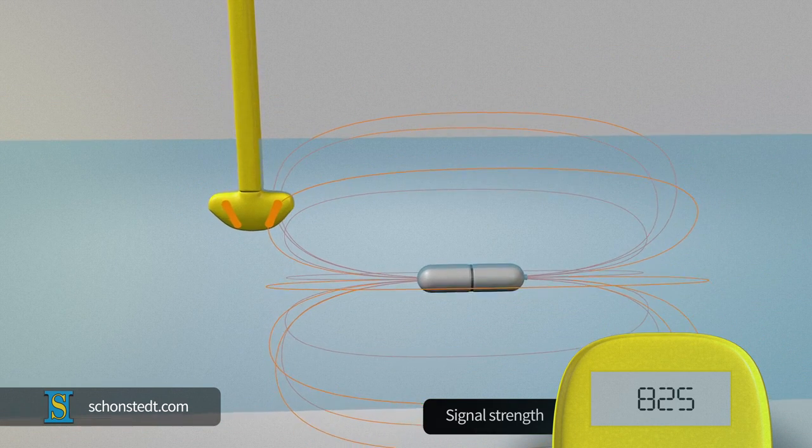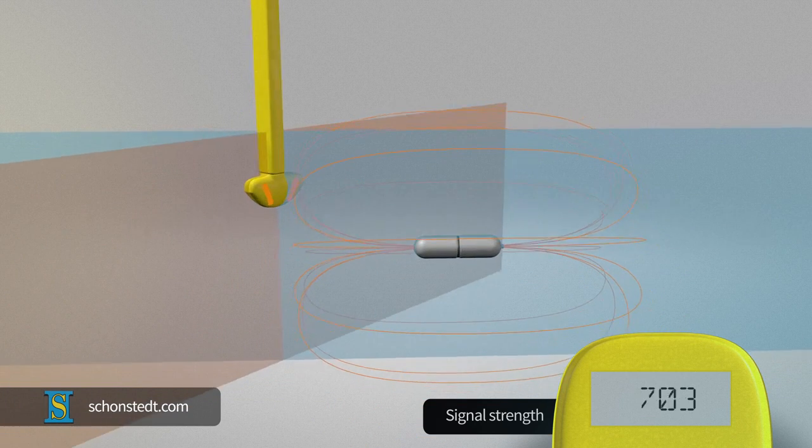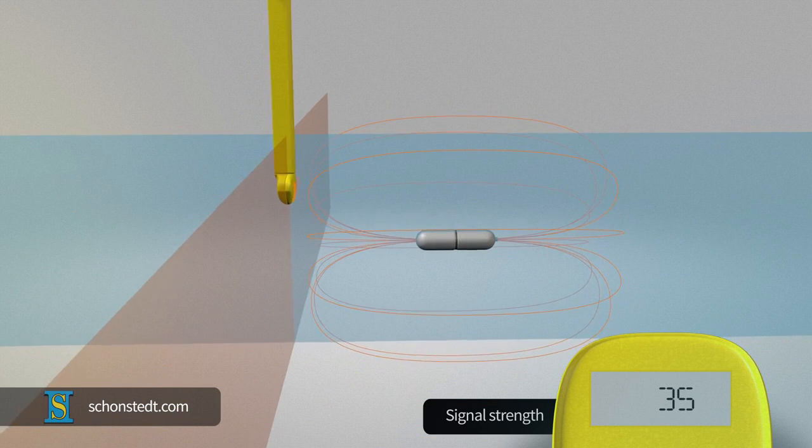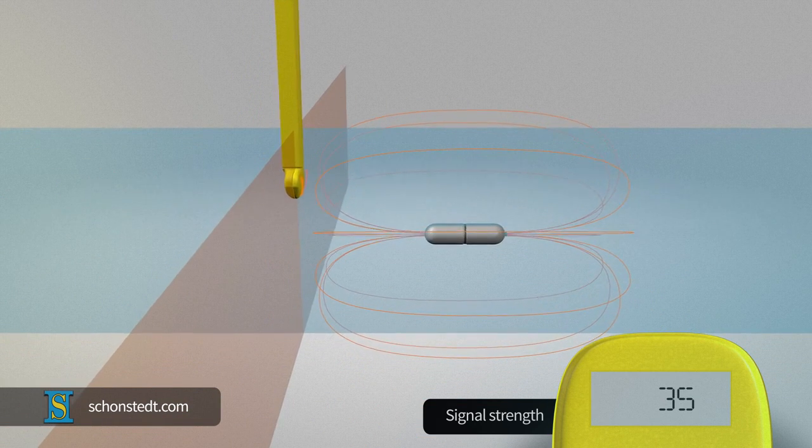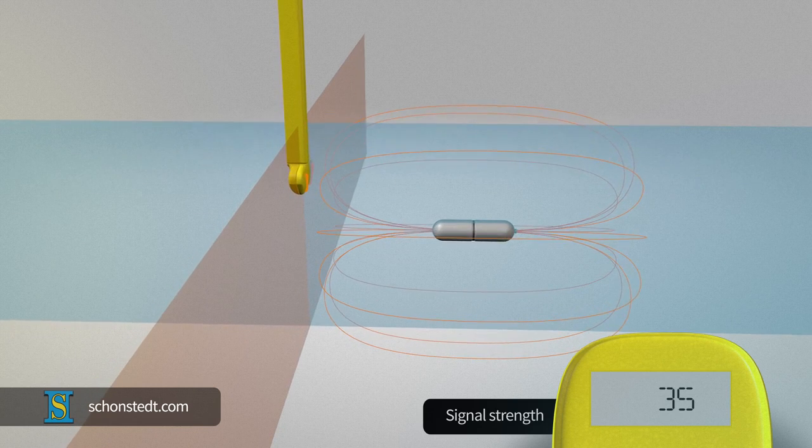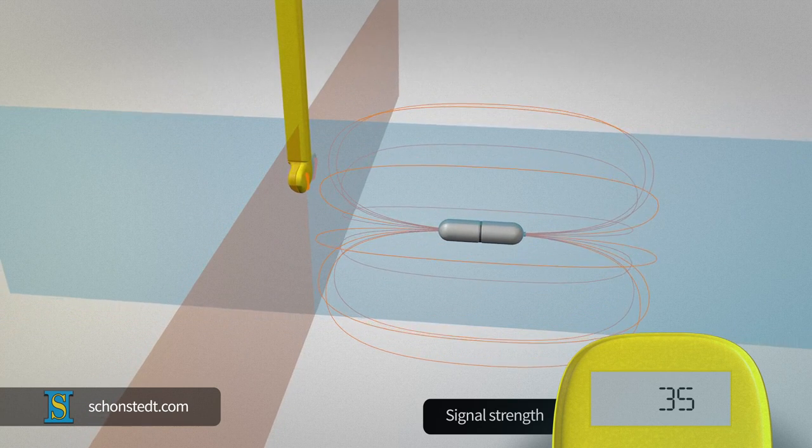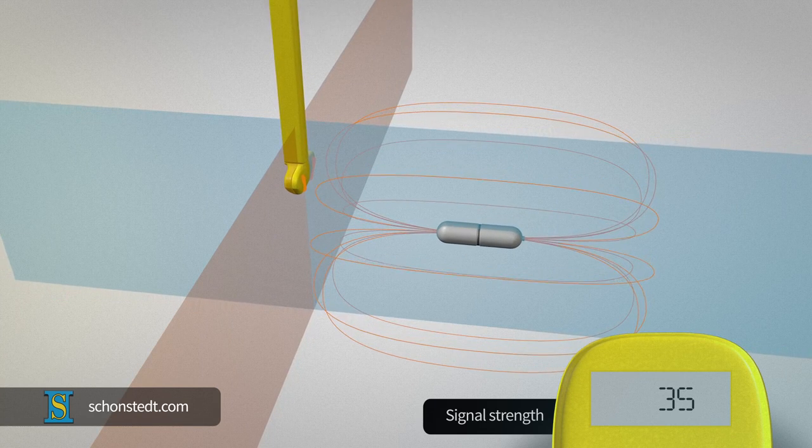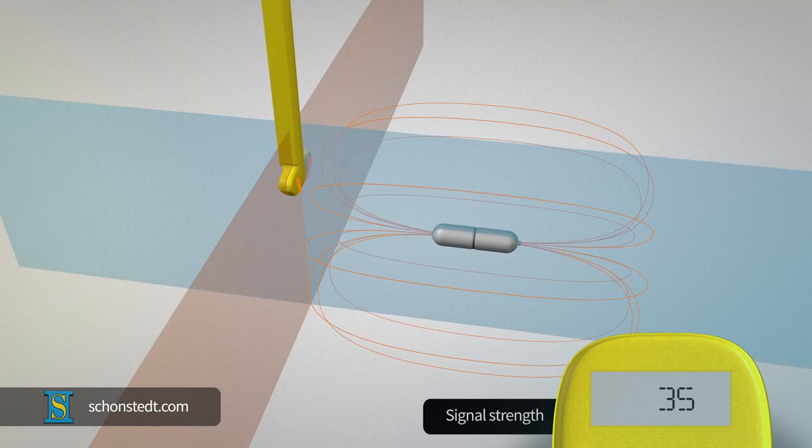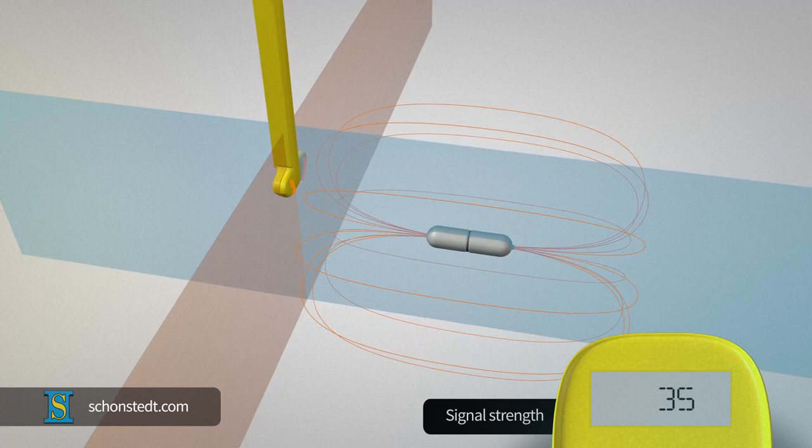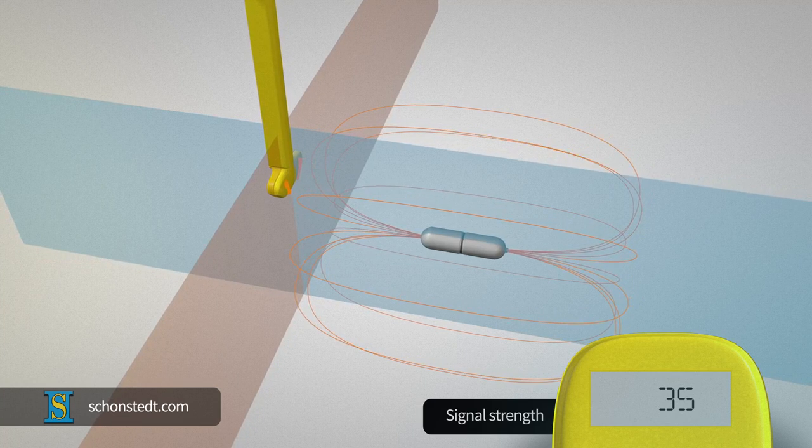By contrast, the signal detected by the sensors is the weakest or null when the axis of the sonde and the axis of the sensors in the receiver are on perpendicular planes. In this case, the field lines of the signal emitted by the sonde are perpendicular to the sensors, generating essentially no signal or a minimal signal.